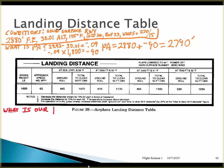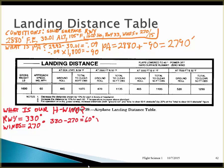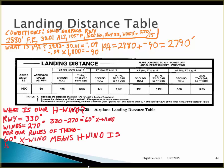Now we look at our headwind. Our runway is 330 degrees, our winds are 270 degrees, so 330 minus 270 is 60 degrees. Using our rule of thumb, at 60 degrees the headwind component is one-half our total wind speed. So the headwind component is 0.5 times 15, which is 8.5 knots headwind.